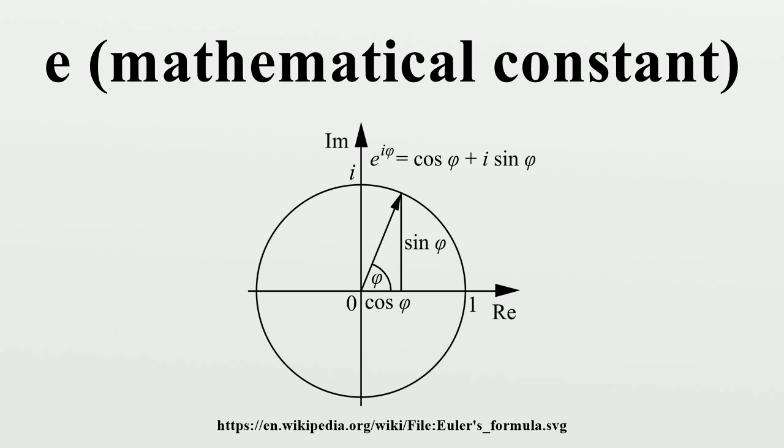The real number e is irrational. Euler proved this by showing that its simple continued fraction expansion is infinite. Furthermore, by the Lindemann-Weierstrass theorem, e is transcendental.